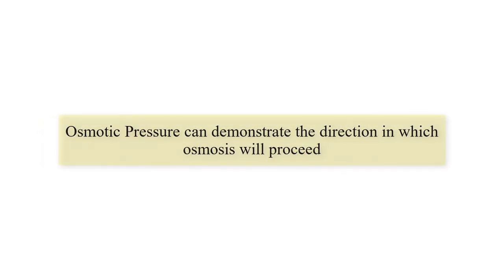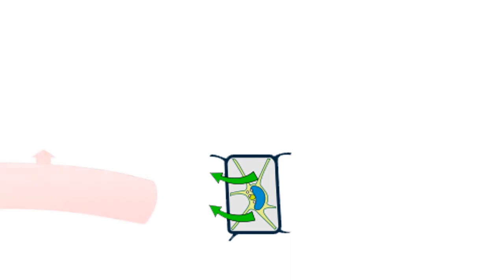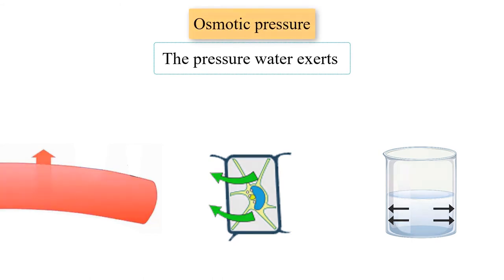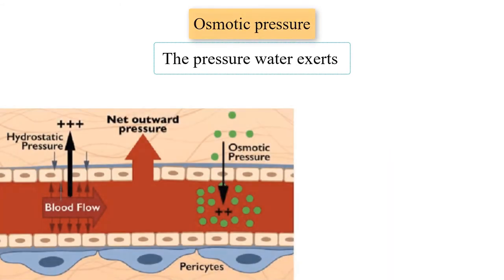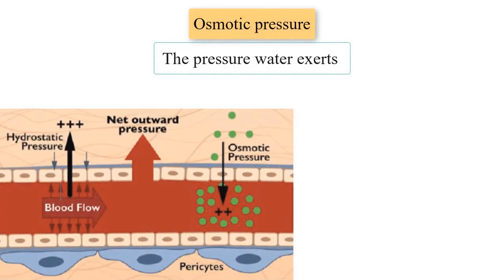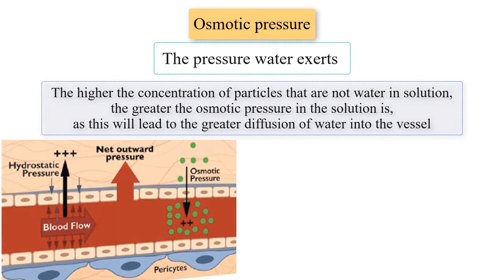Osmotic pressure can demonstrate the direction in which osmosis will proceed. Water exerts a pressure on the walls of its container — whether that container be a cell membrane, a blood vessel, or a beaker — known as osmotic pressure. When water diffuses into a vessel, osmotic pressure increases and there is now a greater concentration of water inside the vessel. How much water will diffuse into a vessel is regulated by the concentration of non-water particles. The higher the concentration of non-water particles in a solution, the greater the osmotic pressure, leading to greater diffusion of water into the vessel.